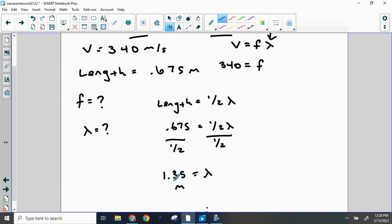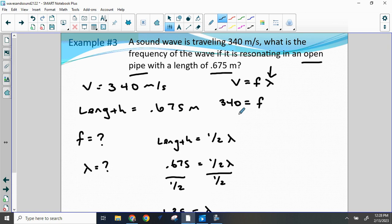So now, once we know the wavelength, let's go back to our original equation. And we can say that the wavelength is 1.35 meters. And now I can put in here that 340 equals f times 1.35, because that is the wavelength.